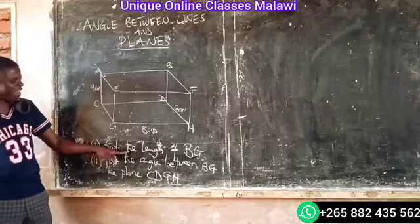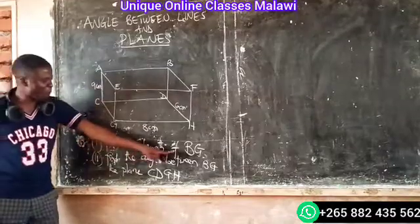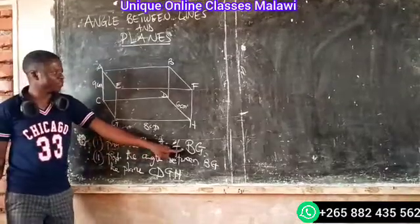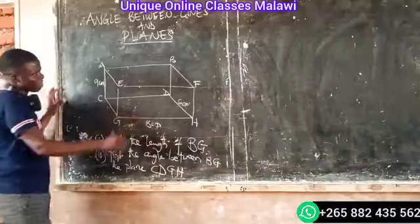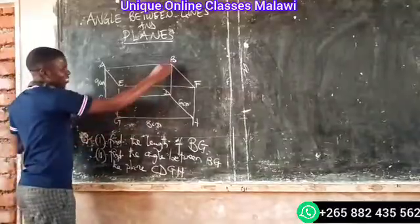You should find the length of BG. The length of BG. The length of BG. The length of DG.